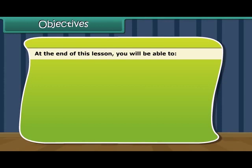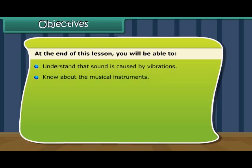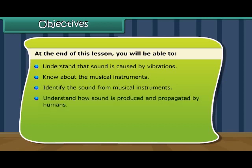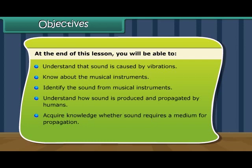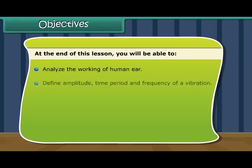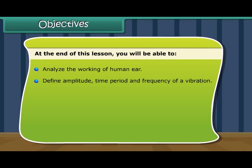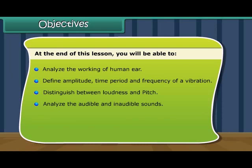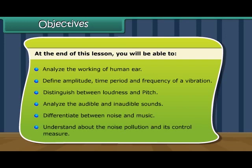At the end of this lesson, you will be able to: understand that sound is caused by vibrations; know about musical instruments; identify the sound from musical instruments; understand how sound is produced and propagated by humans; acquire knowledge that sound requires a medium for propagation; understand the propagation of sound in liquids and solids; analyze the working of the human ear; define amplitude, time period, and frequency of a vibration; distinguish between loudness and pitch; analyze audible and inaudible sounds; differentiate between noise and music; and understand noise pollution and its control measures.